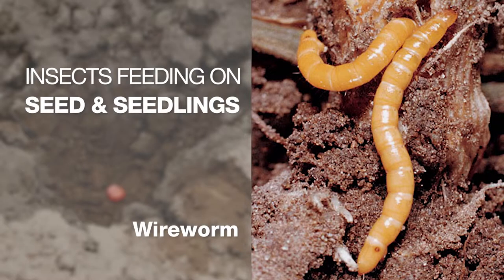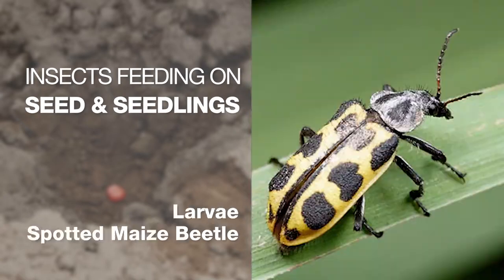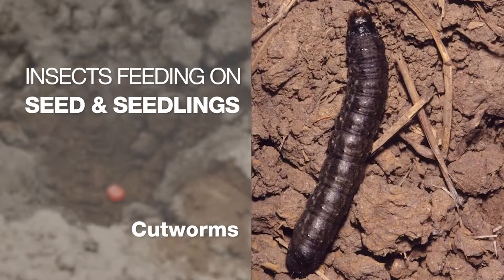Examples of insects that feed on maize seed and seedlings include wireworms, larvae of the spotted maize beetle, and cutworms. These insects reduce the emerged plant population, and if they are not controlled, the crop might have to be replanted.